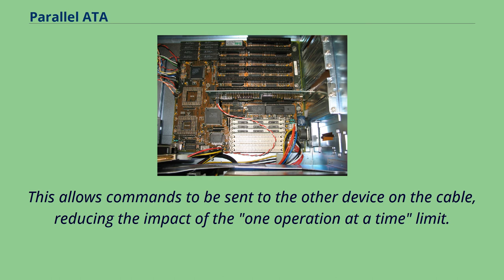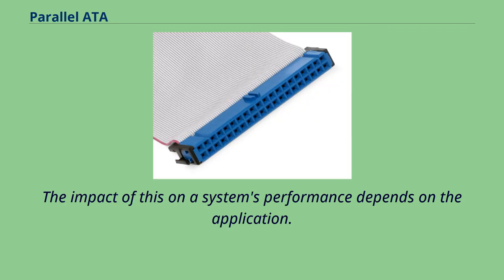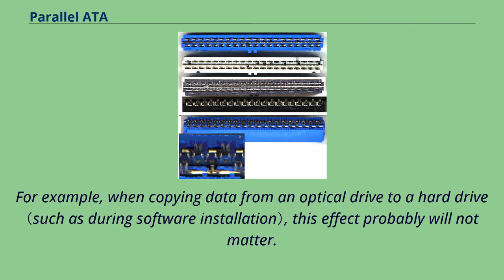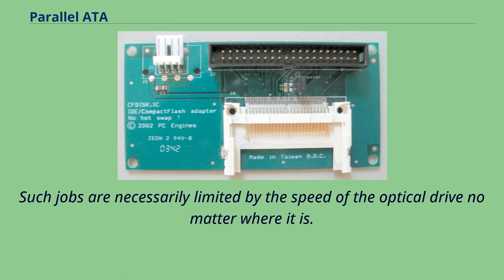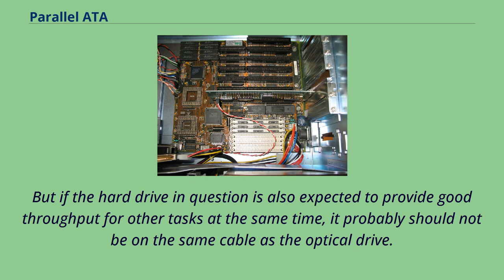The impact of this on a system's performance depends on the application. For example, when copying data from an optical drive to a hard drive, this effect probably will not matter, as such jobs are necessarily limited by the speed of the optical drive no matter where it is. But if the hard drive in question is also expected to provide good throughput for other tasks at the same time, it probably should not be on the same cable as the optical drive.